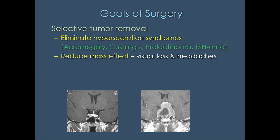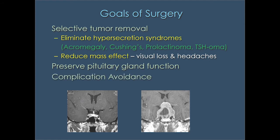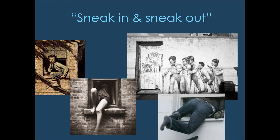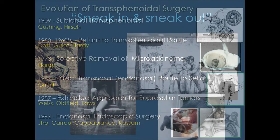The surgical goals are to selectively remove the tumor; eliminate hypersecretion of growth hormone, ACTH, prolactin, or TSH; reduce mass effect — relieving pressure on the optic nerves and the gland itself; resolve headaches; and preserve, improve, or restore gland function. We want to avoid complications. As I like to say — we try to sneak in and sneak out and not get caught.